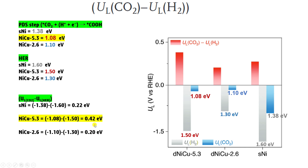If you compare these three values, a more positive value means the catalyst is more selective towards CO2 reduction compared to hydrogen evolution. The lower or more negative value indicates the reaction is less selective for CO2 reduction. Therefore, NiCu 5.3 is the most selective catalyst for CO2 reduction. Likewise, you can calculate selectivity for any CO2 reduction versus HER system using this formula.